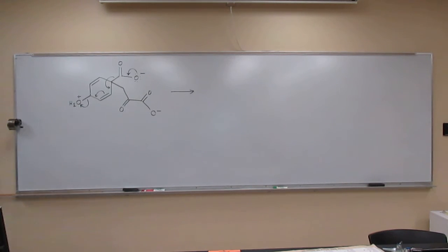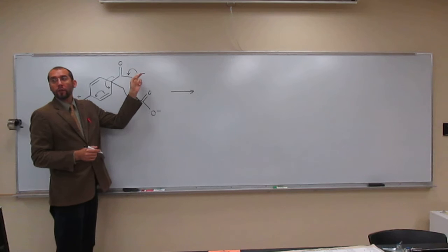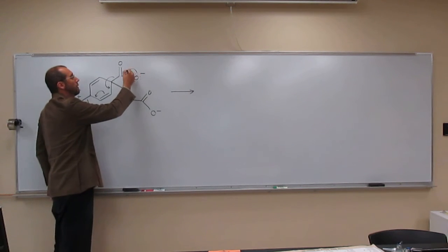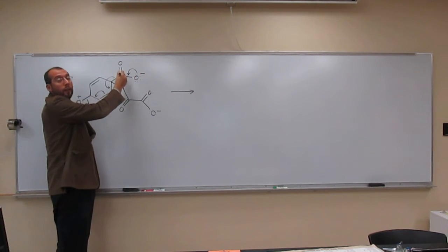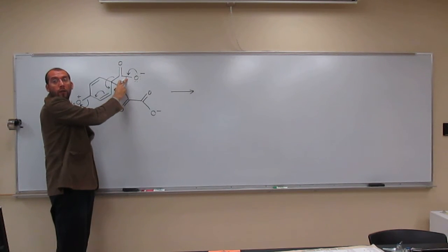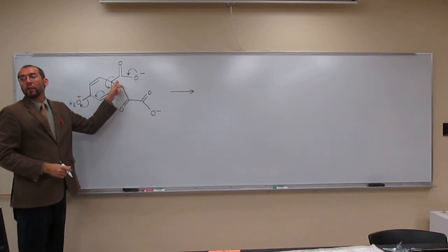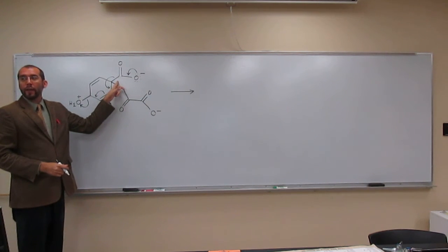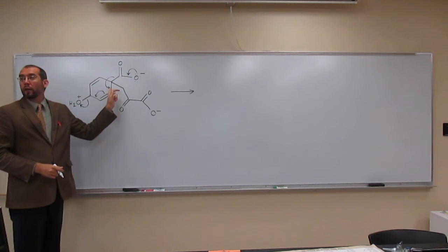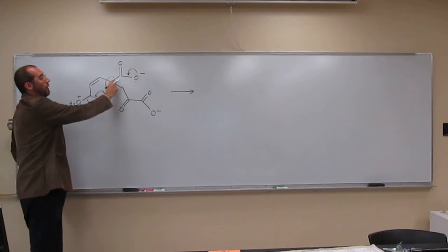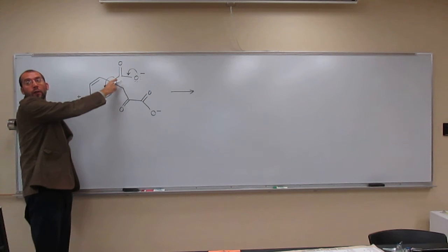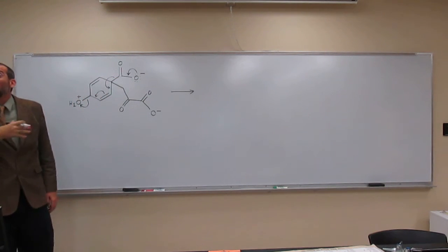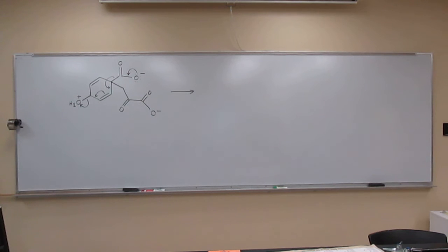So what we see here is that this lone pair of electrons is coming over to make a bond. So instead of having a single bond there, we're going to have a double bond. But then we see this pair of electrons here, what's happening to that? They're moving over to here, right? So what's going to happen to this bond here? It's going to be broken. So there's not going to be a bond there anymore. So don't leave that bond there.